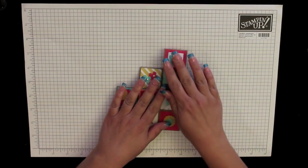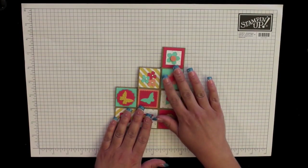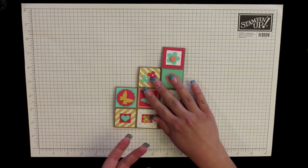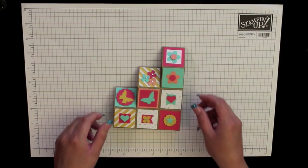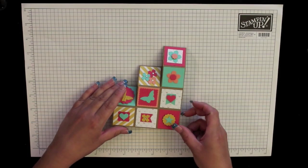As you can see, it does fold flat so that you can mail it to somebody. The only thing is that it won't fit in your standard 4 1/4 by 5 1/2 inch envelope, so you do need a little bit of a larger envelope, but it does fold flat for storage or for sending to somebody.